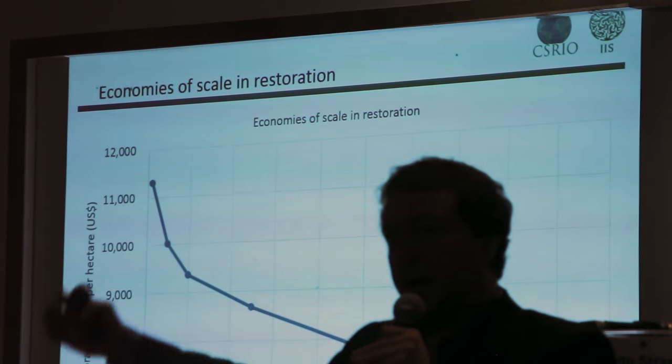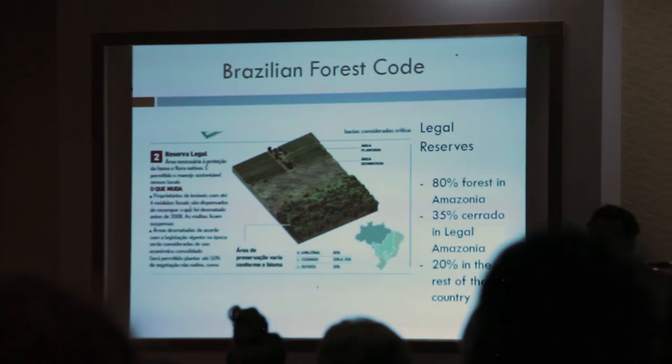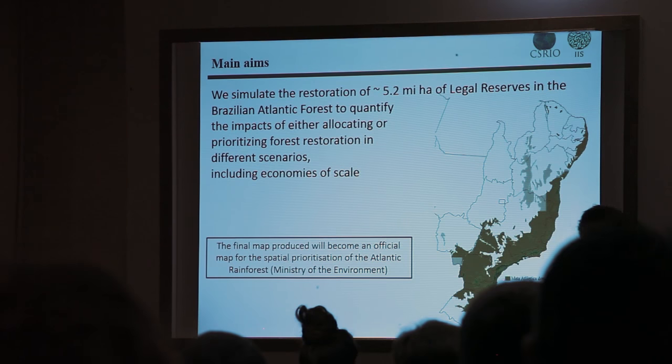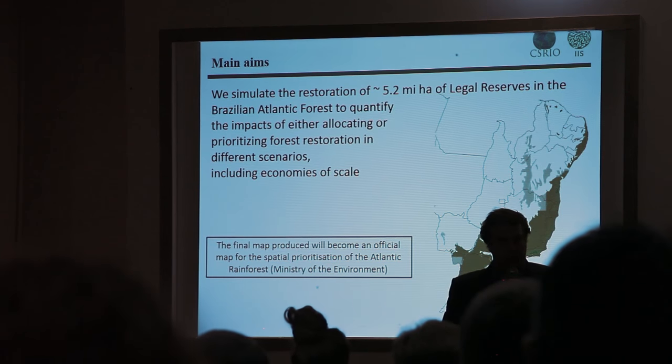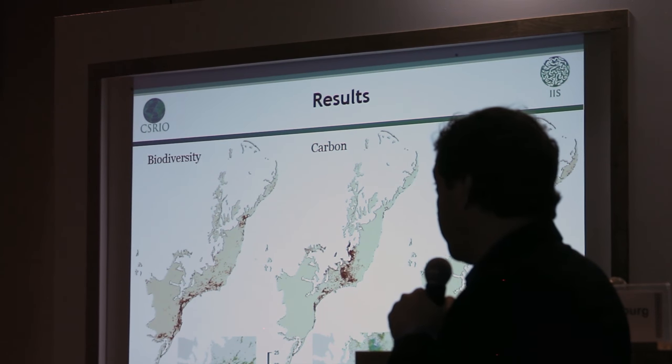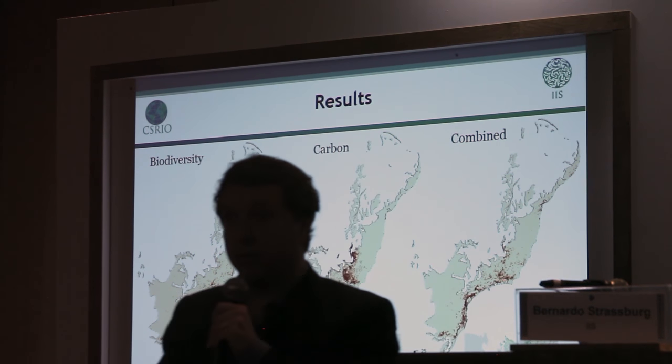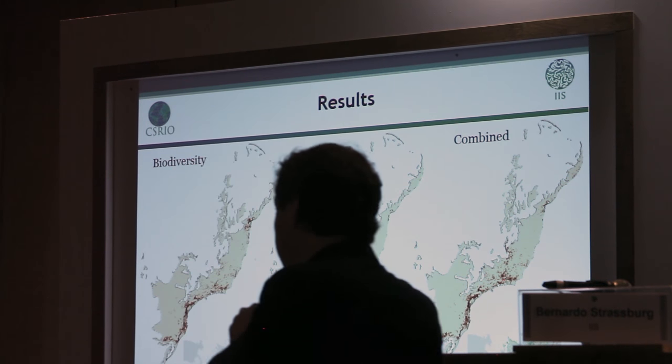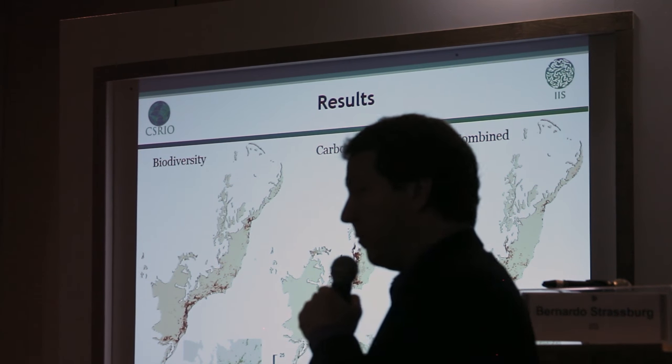Both costs and benefits are defined by the users — the local communities, national governments, and the context you are working with. The benefit for one community will be different from another. In the example shown, we used carbon and biodiversity as the main benefits, and the cost of restoration and the cost of agricultural production as the main costs, because that was defined by the government we were working with — the Brazilian government in that case.